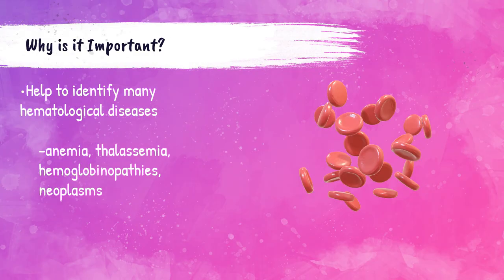This presentation is about the morphology of red blood cells. The appearance of red blood cells can help us identify many hematological diseases. Abnormalities of red blood cells can indicate various types of anemias and thalassemias, which are a group of inherited disorders that cause a decreased rate of production of globin chains, which are part of the hemoglobin molecule.